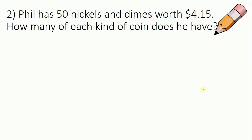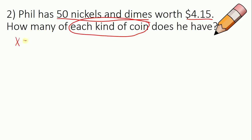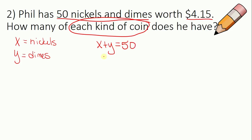Next problem: Phil has 50 nickels and dimes worth $4.15. How many of each kind of coin does he have? The question asks about each kind of coin, so our two variables are nickels and dimes. X is the number of nickels and Y is the number of dimes. Since there are 50 coins total, X plus Y equals 50.